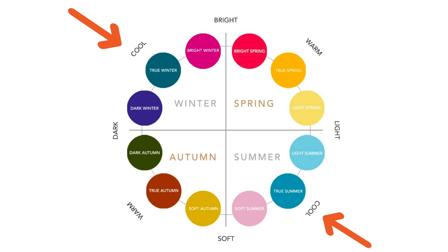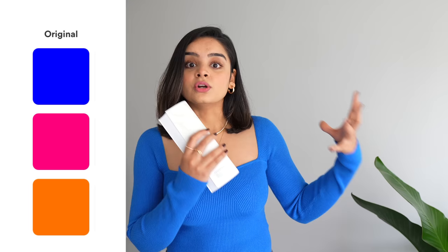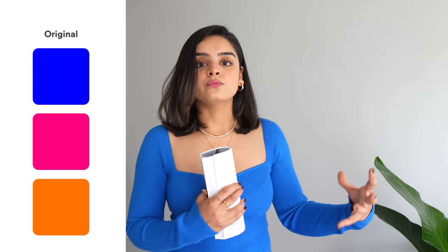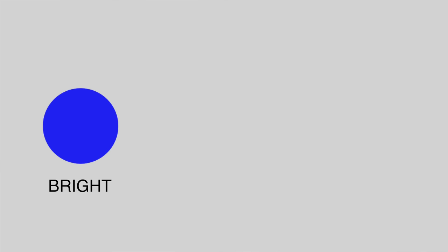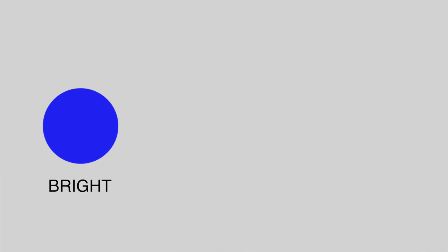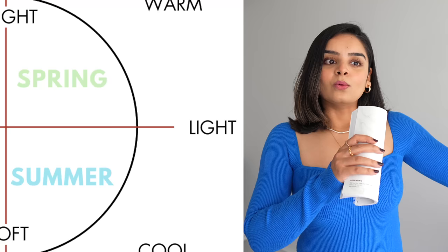Cool and warm represent the cool and warm undertones. But what about dark, light, bright, and soft? The term bright or clear means the original, pure, saturated hue — for example, green, blue, red, yellow in their original shade with nothing mixed in. When you mix white into these colors, they become light — so bright blue mixed with white becomes light blue. That's where the term light comes from, and it explains what colors are included in light summer or light spring.